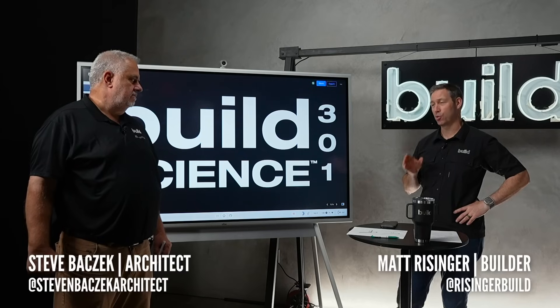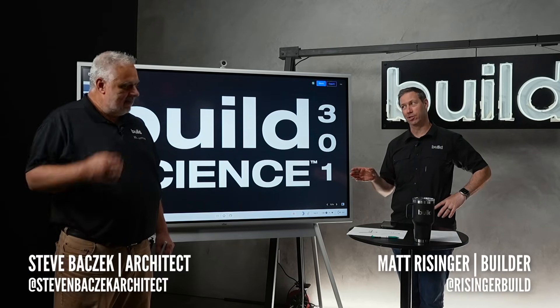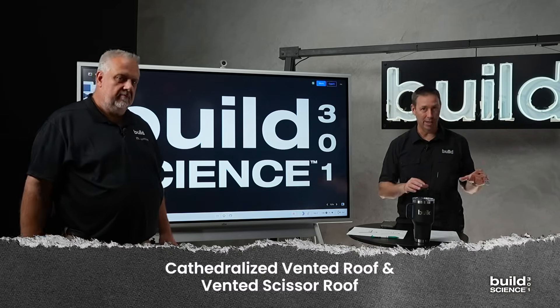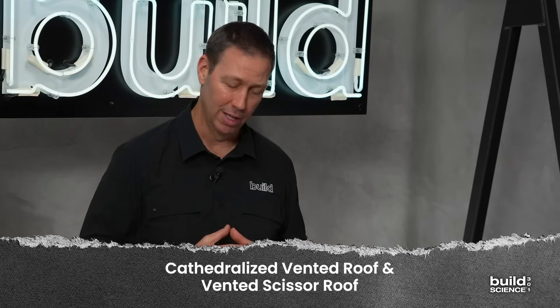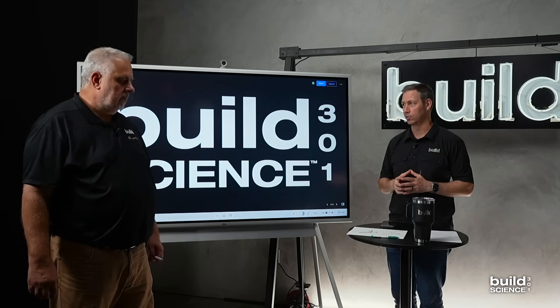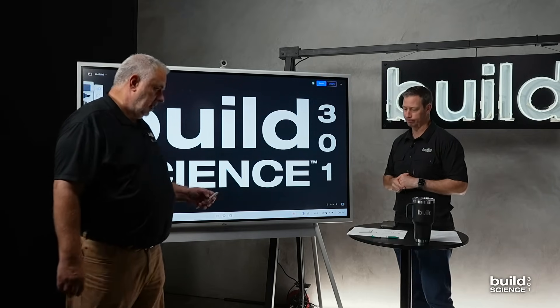All right, my friends, welcome back to Build Science 301. We got probably one of my favorite details here, Steve. We're talking the overroof, which is a ventilated and unventilated assembly. And then, literally my favorite way to build, which I built my house with, the Monopoly truss roof. Now, this Monopoly truss roof could also be a Monopoly hand cut, which I happen to do, but the principle is the same.